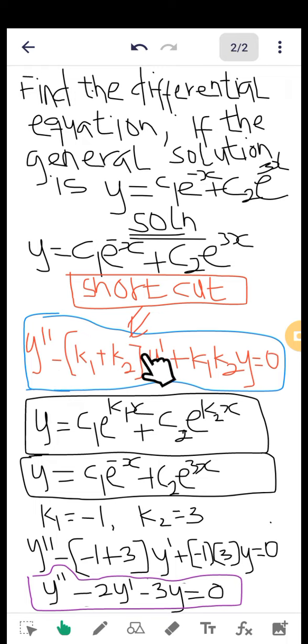So we write: y'' - (k1 + k2)y' + (k1 * k2)y = 0. Substituting k1 and k2 into this equation, we get y'' minus, my k1 was -1 and my k2 was 3, so my k1 which is -1 plus 3.